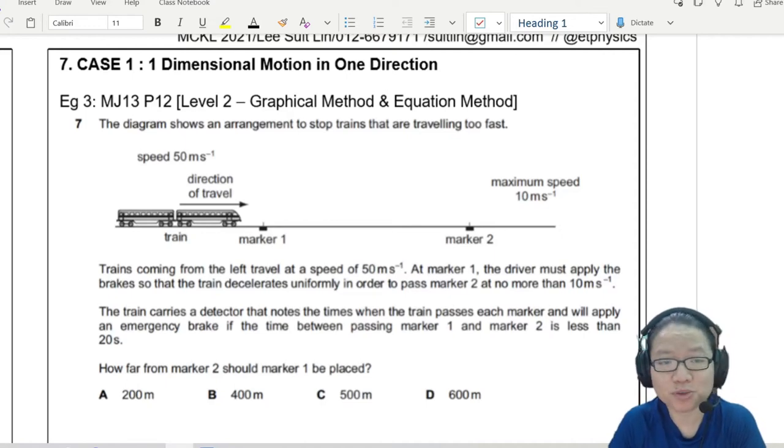The diagram shows an arrangement to stop trains that are traveling too fast. Let's read the question.